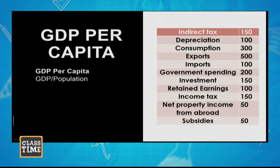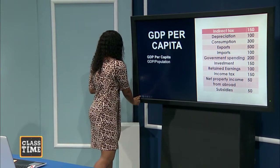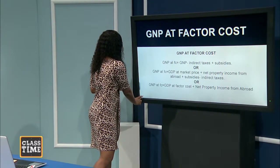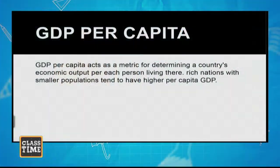If you have a question asking you to calculate GDP per capita, you simply divide GDP by the population. GDP per capita measures what the average output would be per person in the economy — assuming each person is making a contribution, how does the overall GDP reflect on a per-person basis.